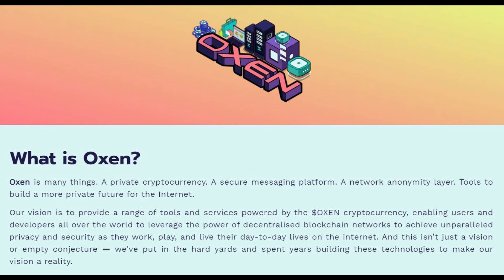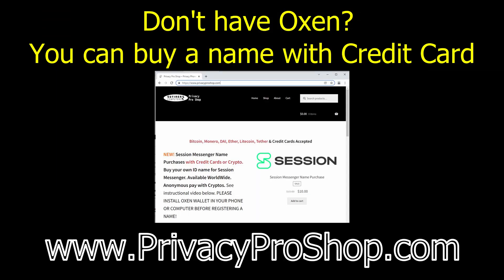You can buy a name and store it in the blockchain forever. The price of a name is currently 7 Oxen, and you need to own some of the Oxen cryptocurrency to be able to purchase a name.